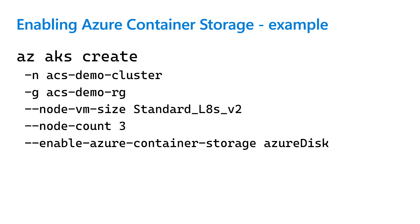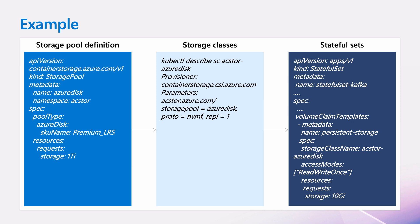Here is the specific example we'll be using in the demo. I am creating a new AKS cluster called ACS Demo Cluster in my ACS Demo Resource Group. The VM SKU for my cluster nodes is Standard L8s v2, and I want my node pool to have three nodes. I am enabling Azure Container Storage with Azure Disk and am not passing any custom values for the storage pool, so a default storage pool will be created. On the left you can see what the storage pool definition looks like — in this case it is a Premium LRS storage pool of size one terabyte. You can also create your own custom storage pools if you would like.